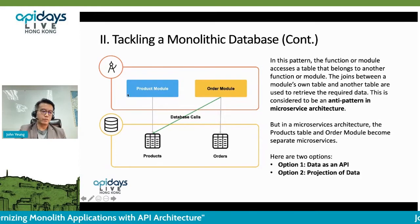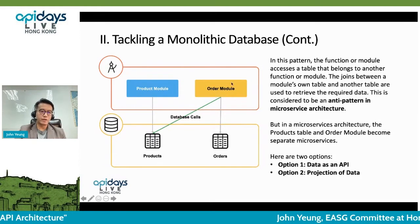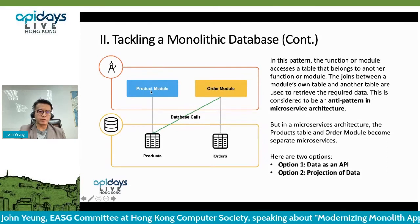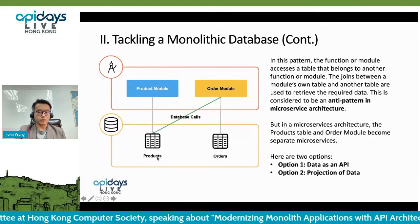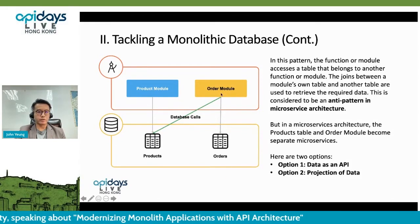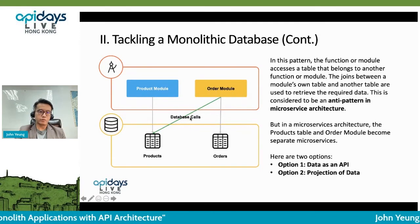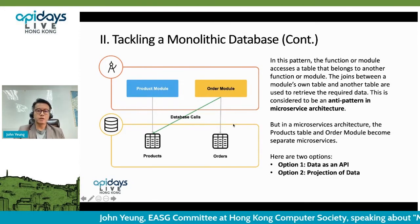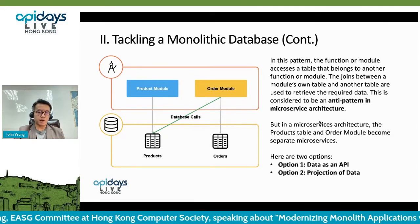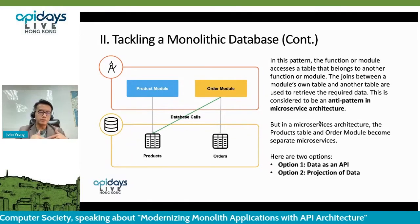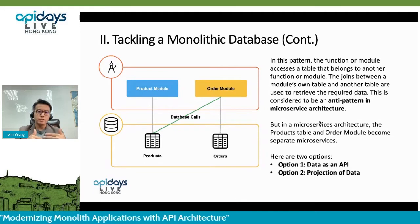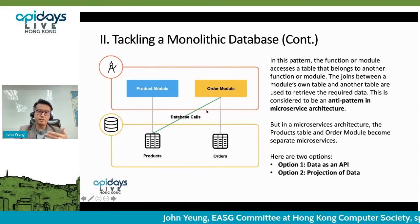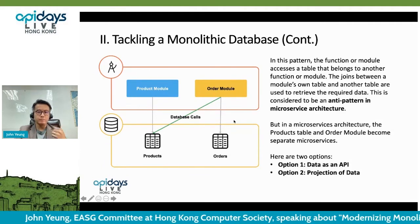Here's a very typical example. We have the order module and the product module in the database layer, where each module is attached to a certain table — the product module attached to the product table and the order module attached to the order table. But sometimes the order module will also use a join table to connect to the product table to grab some data. This is actually a kind of anti-pattern in microservices architecture, because in microservices the product table and the order module should become separate microservices.